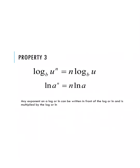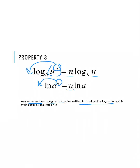Moving on to property number 3 — this one is used a lot. We have log base b of u to the nth power, and when we rewrite this the n is moved to the front of the log. If we have an expression with an exponent, we can take that exponent and move it to the front of our log to simplify it. This works the same way with natural logs: any exponent for a log or natural log can be rewritten in front of the log and multiplied by the remaining expression.